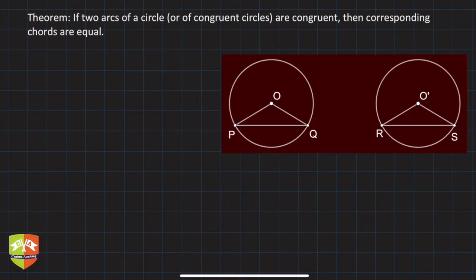Now after learning all those definitions, we are going to talk about some theorems related to circles. In this particular session we will discuss this theorem: If two arcs of a circle or of congruent circles are congruent, then corresponding chords are equal.